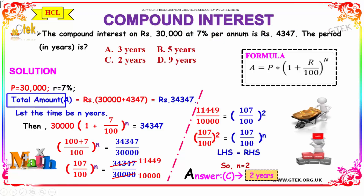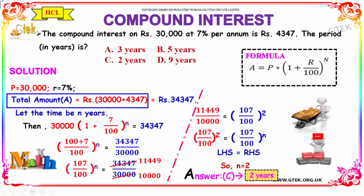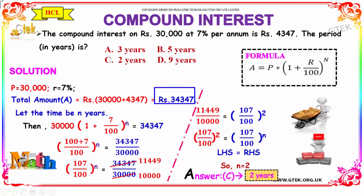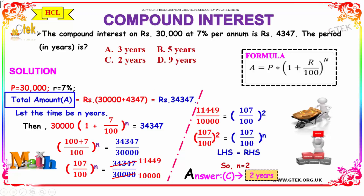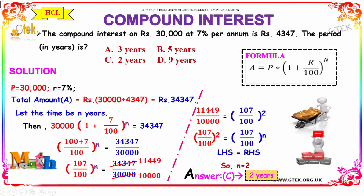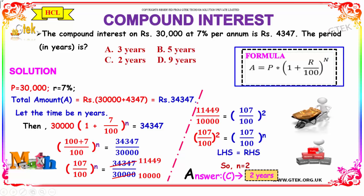This implies the total amount A is equal to the principal amount plus the interest amount, which is Rs 30,000 plus Rs 4,347, which equals Rs 34,347. Therefore, the total amount A is Rs 34,347. Let the time be n years. Substituting the known values in the formula A = P into (1 + r/100) whole power n,